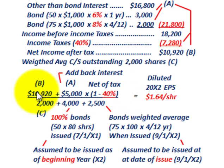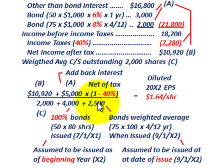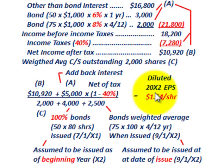For comparison, basic (non-diluted) earnings per share would be $10,920 ÷ 2,000 shares = $5.46. Since we're dealing with the dilutive effect of convertible bonds, we added back the after-tax interest to increase the numerator, and increased the denominator by the number of shares from bond conversions based on our definitions. That concludes our example on diluted earnings per share for convertible bonds, which represent convertible securities.